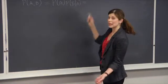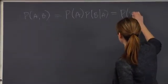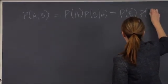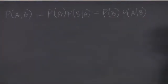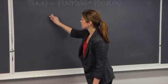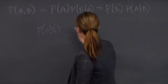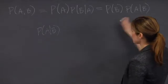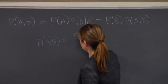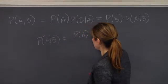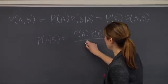And by symmetry I can write this as the reverse. This is also equal to the probability of B times the probability of A given B. So if I actually wanted to solve for something, say the probability of A given B, I can just rearrange these terms. So the probability of A given B equals the probability of A times the probability of B given A divided by the probability of B.